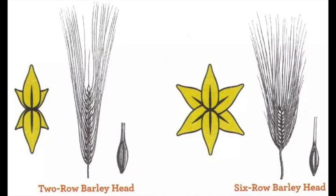Unfortunately, those six-row varieties grown at the moment have some issues which prevent them from achieving their yield potential. Even though we have triple the number of grains on a spike, you don't get triple yield. This is because six-row varieties don't have as many side branches, so the plant itself doesn't make as many spikes. The grain from the now-fertile lateral spikelets also tends to be smaller, so you end up with wider variation in seed size, weight, and dimensions.